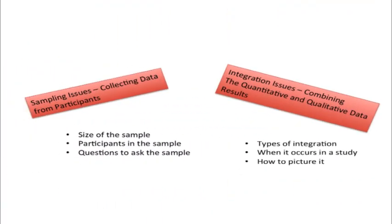In terms of sampling, I'm going to talk about how we collect data from participants in a mixed methods study. I'll be reflecting about the size of the sample, who the participants might be in the sample, and even some questions that might be asked of the sample. On integration, I'm going to turn to three topics: the types of integration we see in mixed methods research, when it occurs in a study, and how to picture it.